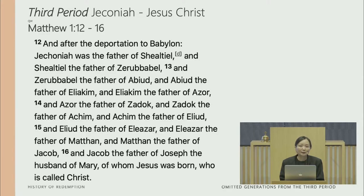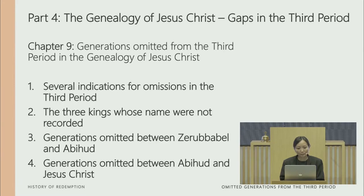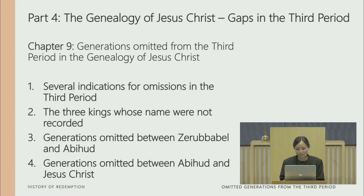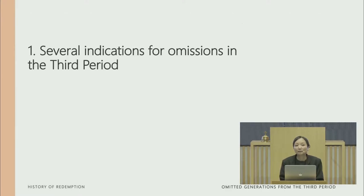The third period in the genealogy of Jesus Christ is recorded in Matthew chapter 1, verses 12 to 16. Within this chapter, we are going to look at four points. First, several indications for omissions in the third period. Second, the three kings whose names were not recorded. Third, generations omitted between Zerubbabel and Abihuod. And fourth, generations omitted between Abihuod and Jesus Christ.